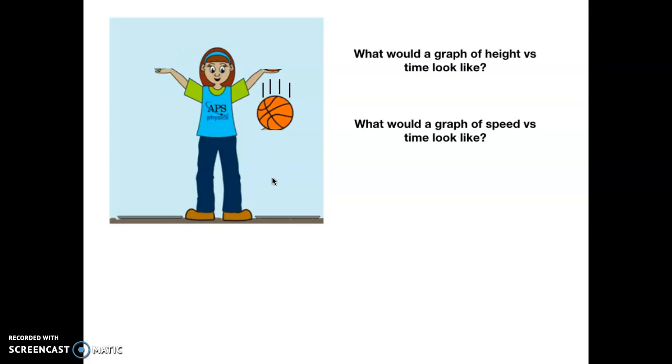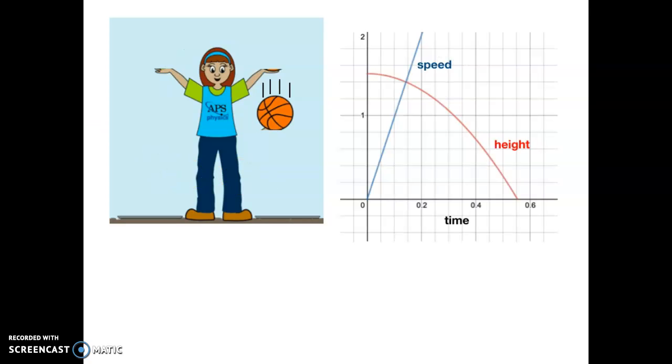So hopefully you have an idea in your head of what each of these graphs will look like. Here is in fact what they would look like. A graph of height starts out high when the ball was dropped, and then this is a curved graph because the ball falls faster and faster. So each moment the amount it goes down gets larger and larger. Speed starts at zero and then increases linearly.